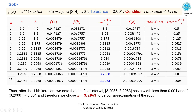Tolerance is 0.001. Condition: tolerance ≤ error. First iteration is taken similarly to the previous example. We continue through iterations 2, 3, 4, up to the 11th iteration. At the 11th iteration, the error is 0.005. Since 0.001 is not less than or equal to 0.005, this condition is false, so we stop. The root is found to be 3.2963.